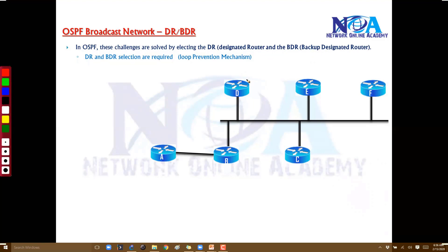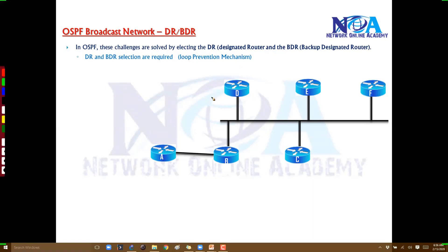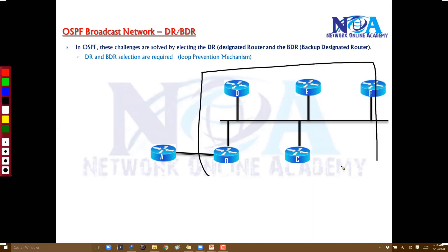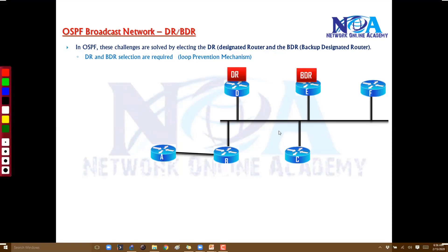The DR and BDR mechanism is a loop prevention mechanism to prevent the loops we just discussed. Out of the broadcast network — in this example with five routers on one BMA network — the routers will decide and elect one router as DR and one as BDR. Let's assume router D is selected as DR and router E is BDR.